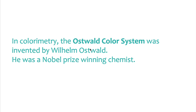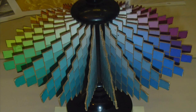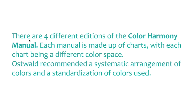Ostwald invented the color system similar to how Munsell invented his. He invented different editions of the color harmony manual, each made up of charts with different color spaces. Ostwald recommended a systematic arrangement of colors and a standardization of color use.